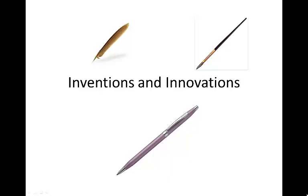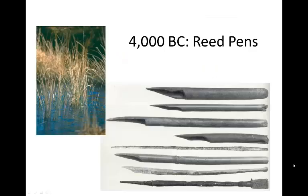This is an example of the difference between inventions and innovations, as told by the story of the pen. About 4,000 years ago, Egyptians realized that hollow reeds or grasses that grew in the swamps could be used to hold colored dye that they could write with.